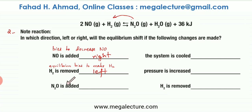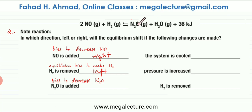Next, N2O is being added. The equilibrium is going to do the opposite — it's going to try to decrease N2O. The way N2O can be decreased is by the backward reaction, where N2O gets used up and converted back into reactants. So if N2O is added, the equilibrium shifts to the left-hand side.